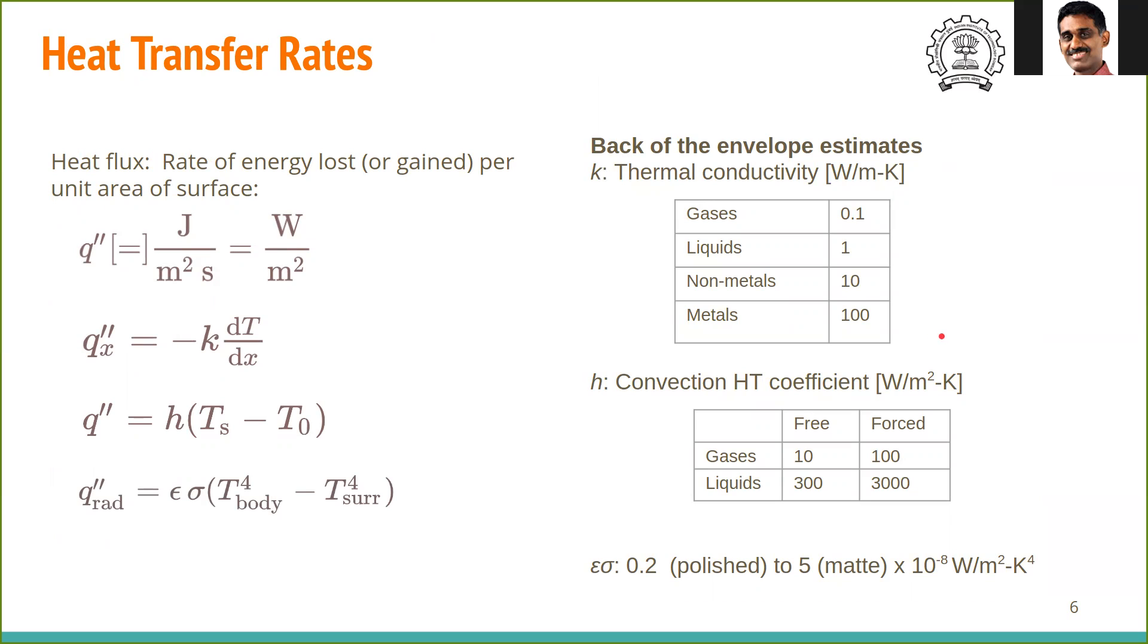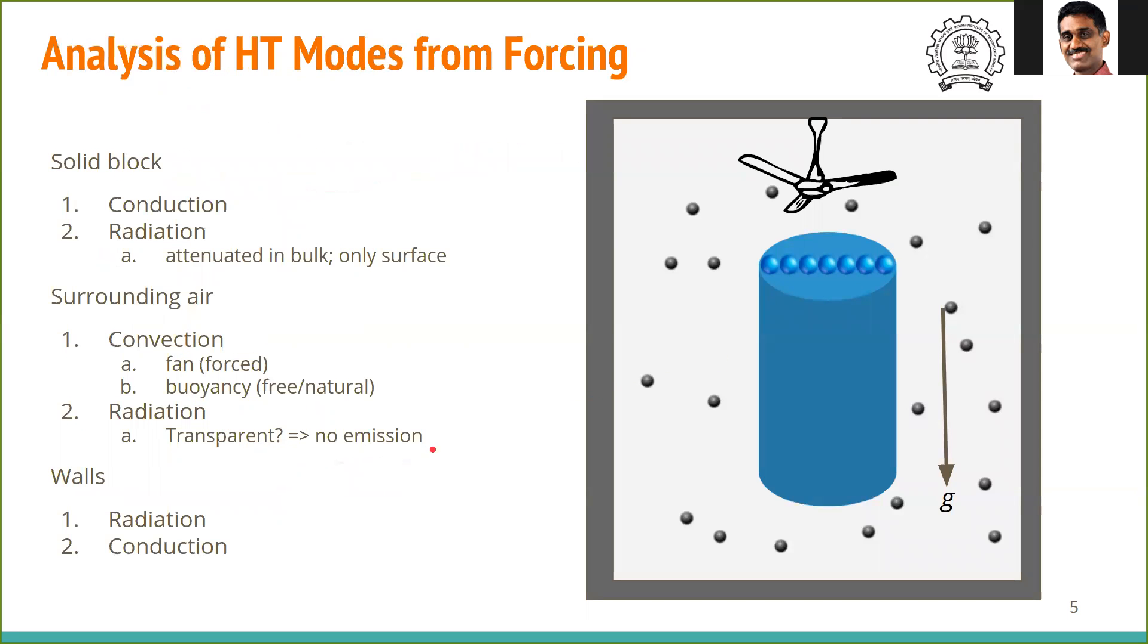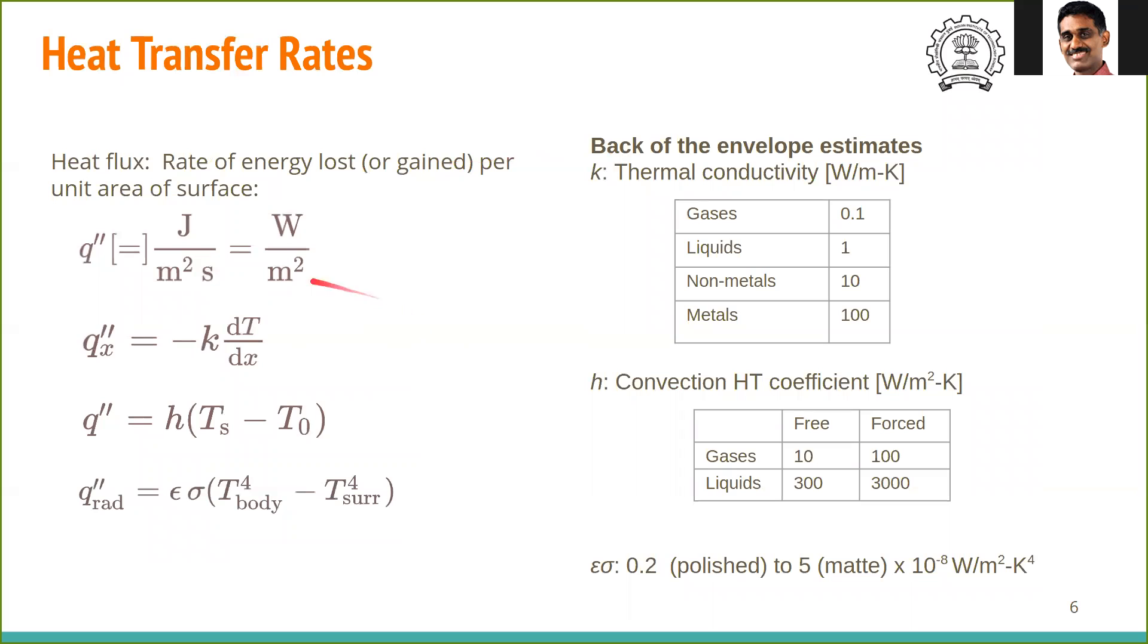One of the other things that we can do is what is known as back-of-the-envelope calculations. This will be helpful in doing simplifications. So what are these things? This is to estimate approximate heat transfer rates coming from different phenomena. In this problem, we have several things that are happening. We don't know a priori which one of them is going to be important unless we have put some numbers in it. So that's what we are doing in this step.